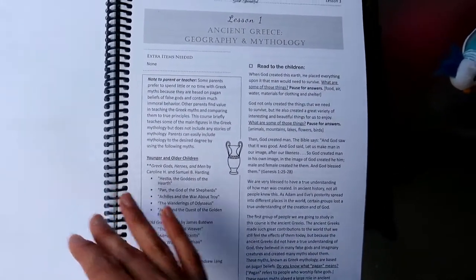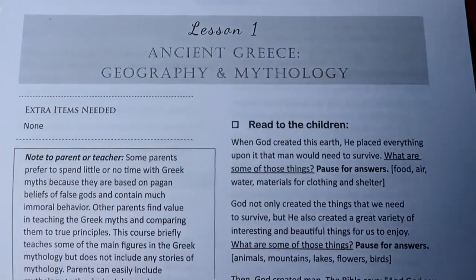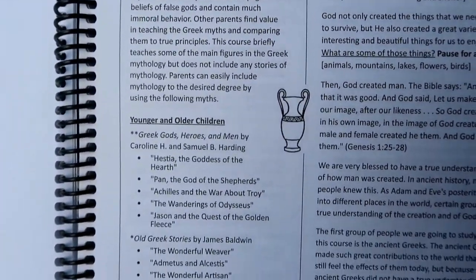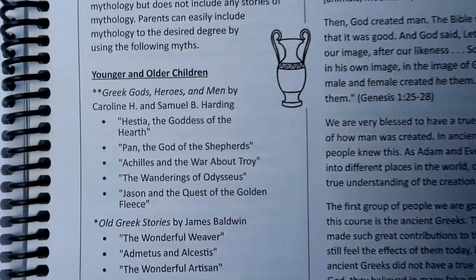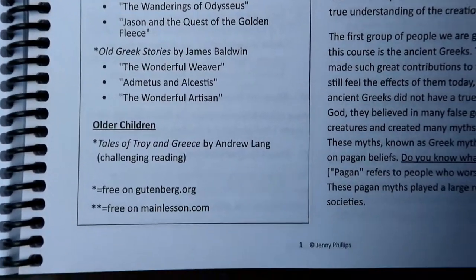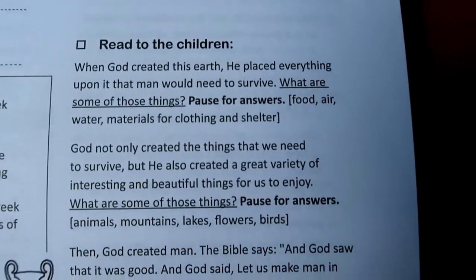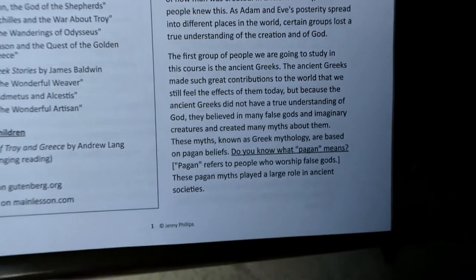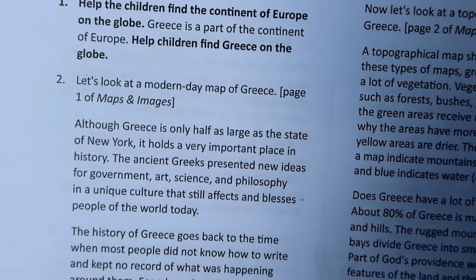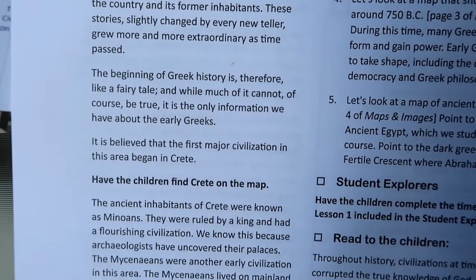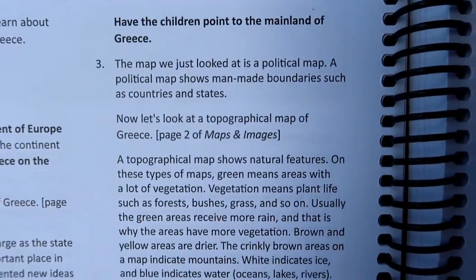Each lesson is designed to take around 60 minutes. This includes 20 minutes for a read-aloud book of your choice. Lesson times will vary depending on the amount of discussion and exploration you choose to do. Also, many of the suggested read-aloud books will require you to read additional times outside of lesson times in order to complete the book by the end of the unit.